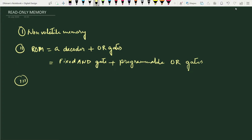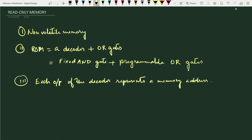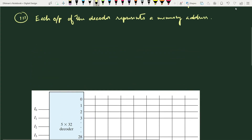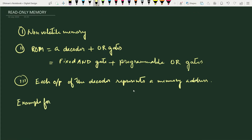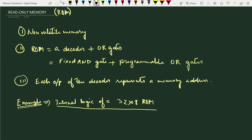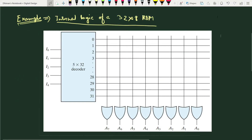Each output of the decoder represents a memory address. Now let us see the construction of a read-only memory using the example of a 32 into 8 ROM. This 32 represents the number of words — this ROM can have 32 words stored in the memory — and each word consists of 8 bits.